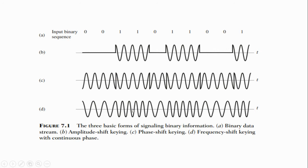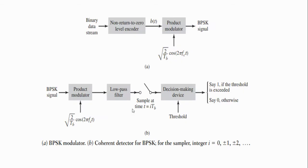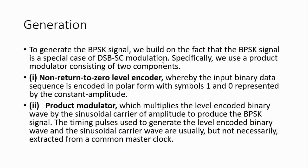Frequency shift keying has the binary frequency shift keying with continuous phase. Now we see the generation of binary phase shift keying. In binary phase shift keying, it has two blocks: one is the non-return-to-zero level encoder, and then the product modulator. In the non-return-to-zero encoder, the given binary data is encoded into a polar form signal — the binary sequence is converted into a polar form signal.